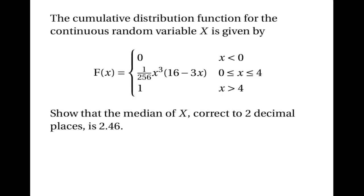Let's look at another example. This time suppose we're given the cumulative distribution function and asked to show that the median is 2.46 correct to two decimal places. We could try to solve F(m) equals a half directly, but it would be an extremely complicated equation involving cubes and even the fourth power of m. There's a much simpler method: we can show the median is 2.46 to two decimal places by showing it lies between 2.455 and 2.465, demonstrating that the cumulative probability at 2.455 is less than a half and at 2.465 is greater than a half.